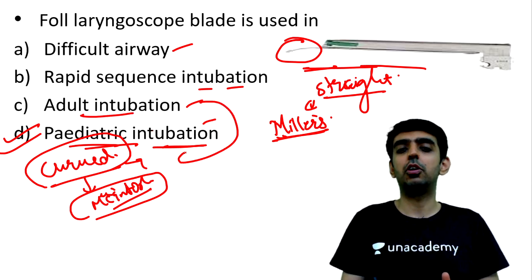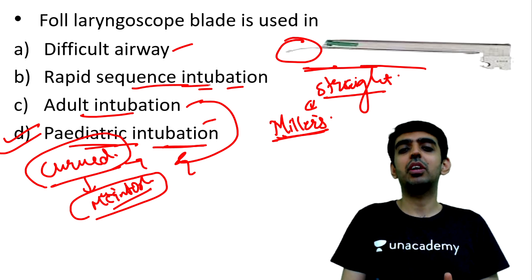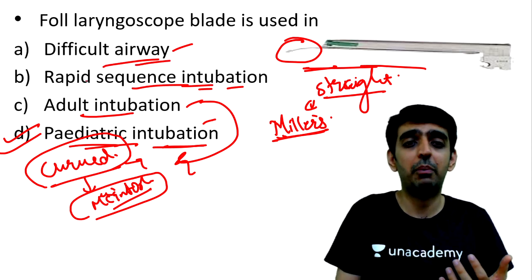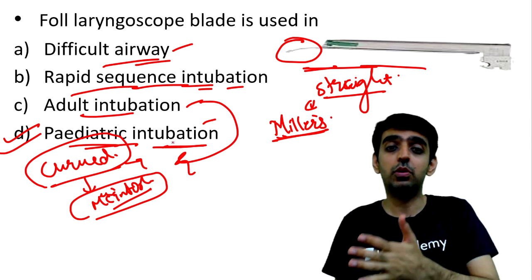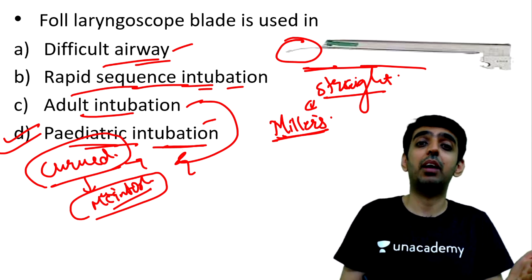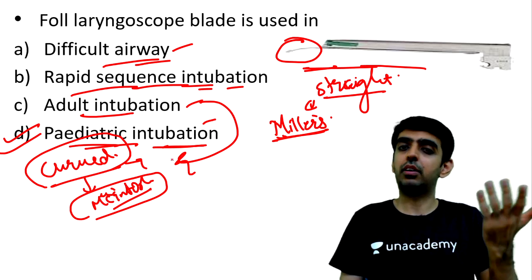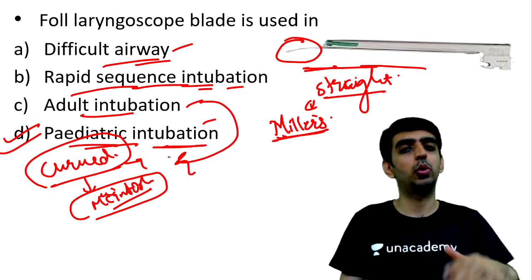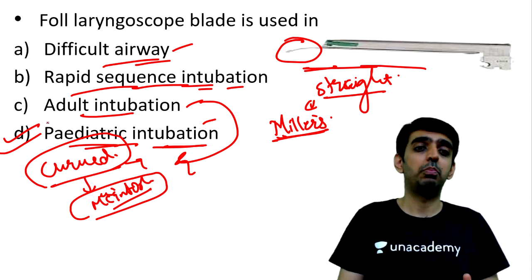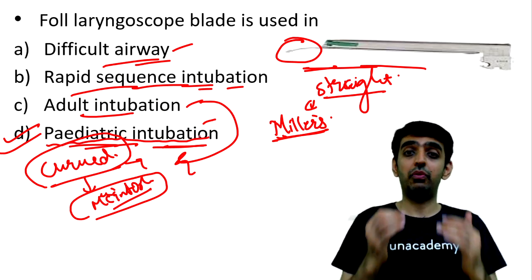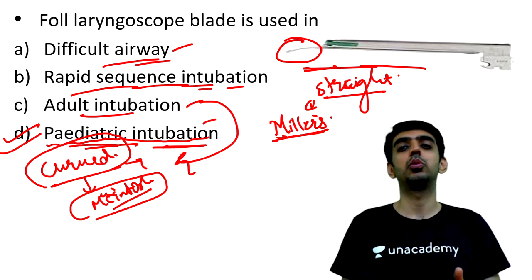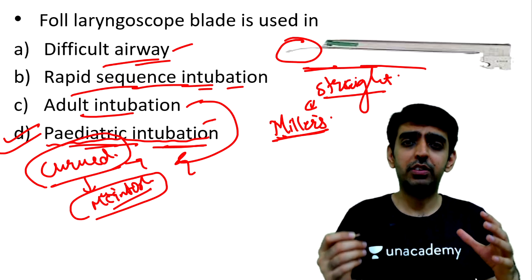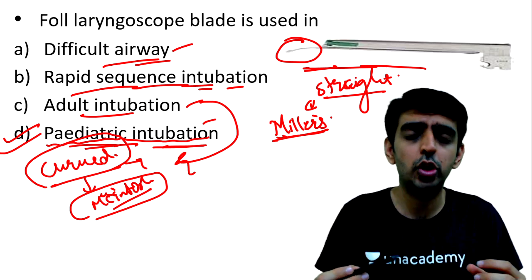For adults, we use the curved Macintosh blade. For RSI and difficult airway, a video laryngoscope can be used; curved blade is used for RSI in adults. The correct answer is D — the straight Miller's blade is used for pediatric and infant intubation, including neonates.